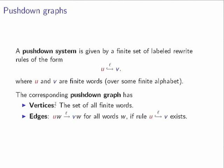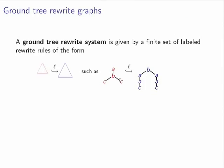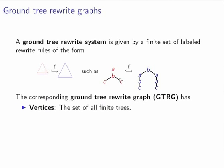For example, assume you have a ranked alphabet where A is a unary symbol, B is a binary symbol, and C is a nullary symbol. Then the left-hand side is a tree over this alphabet, and the tree on the right-hand side is also over this alphabet. The infinite graph described by such a finite formalism has as its set of vertices the set of all finite trees.